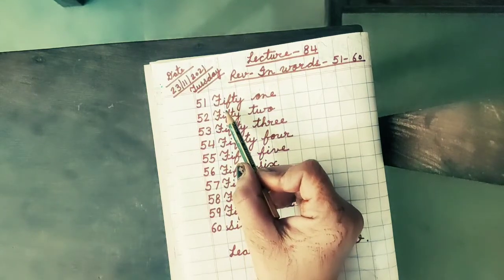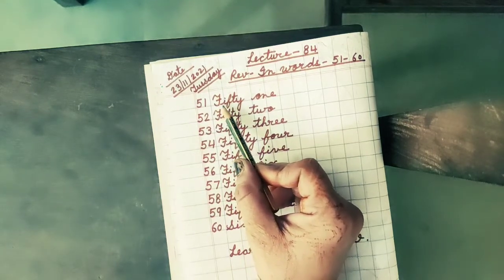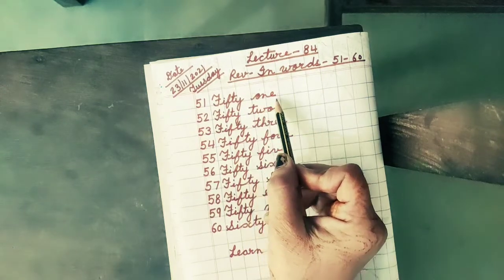Spelling of 51 is: you know the spelling of 50, F, I, F, T, Y, 50, O, N, E, 1. 51.